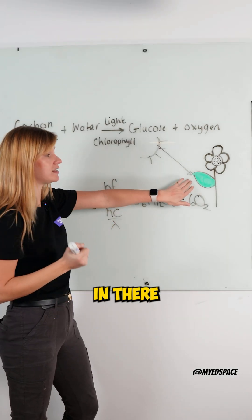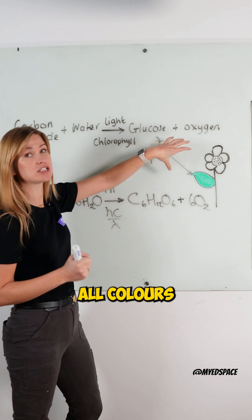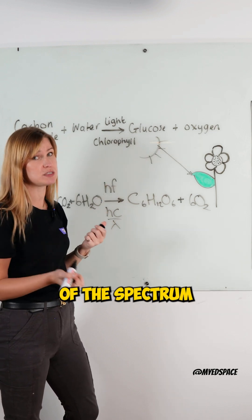It hits the pigment, the chlorophyll in there. And the reason why it's green is because the chlorophyll absorb all colors of light, except for the green part of the spectrum.